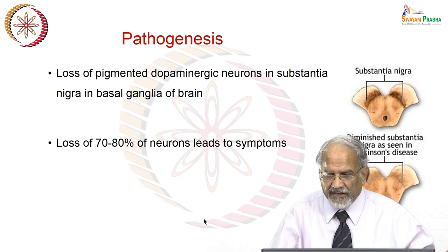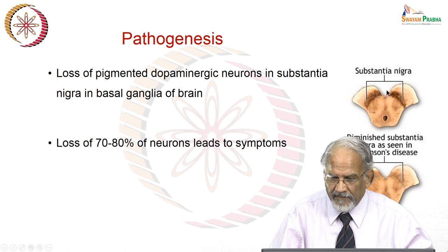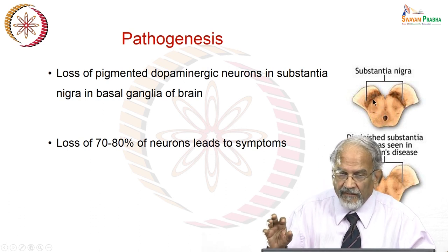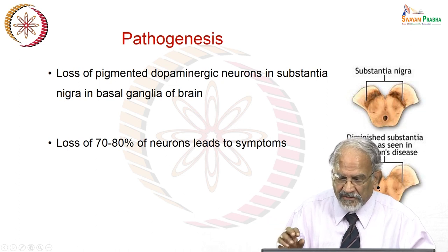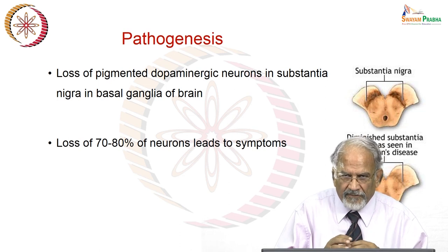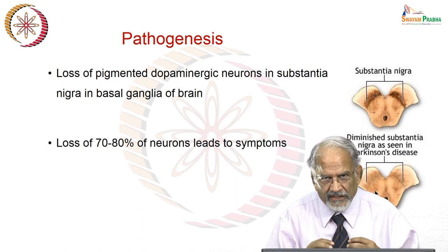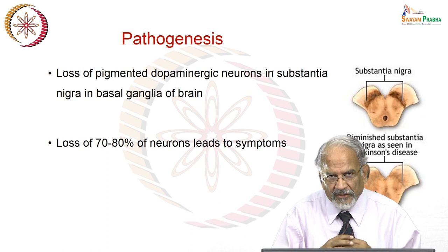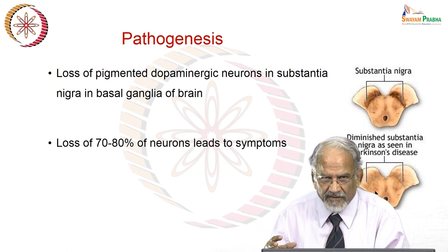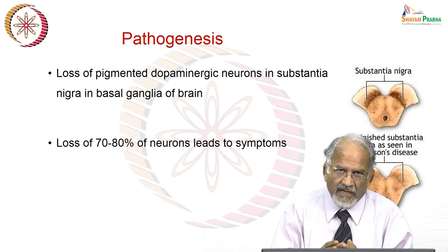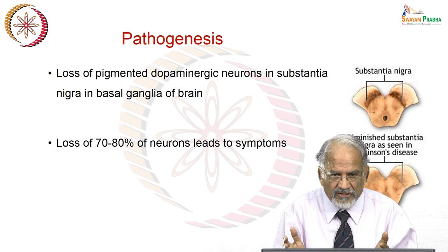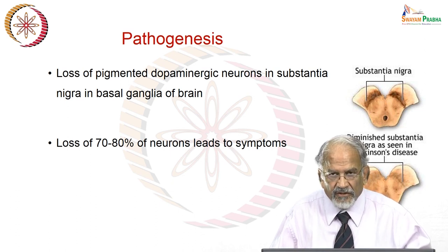If you compare these two pictures, this is the substantia nigra. In the normal brain, this is a pigmented substantia nigra with dopaminergic neurons; in Parkinsonism, this is diminished. Usually dopaminergic neurons decrease over time, but symptoms appear only when functional dopaminergic neurons are reduced by more than 70 to 80%. The neurodegeneration starts much earlier, but the symptoms appear much later because the other remaining dopaminergic neurons compensate.